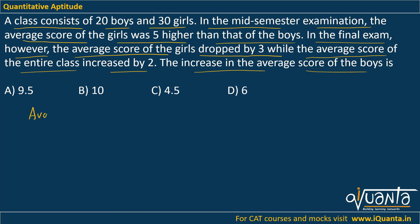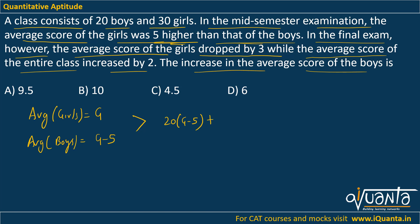Let me assume that the average marks of the girls in the mid-semester examination is g, and we have been given that it was 5 higher than that of the boys. So the average of boys in the same mid-semester examination will be g-5. Using this, the total marks of boys will be 20(g-5) and there were 30 girls so 30g will be the total marks of the girls. So this will be equal to 50g-100, the total marks of the whole class.